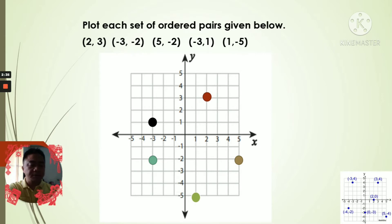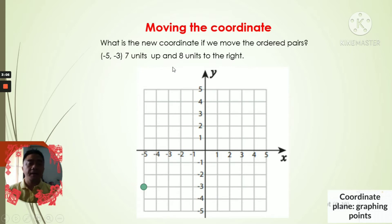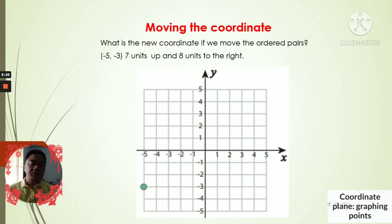Now we have a new activity about ordered pairs — moving the coordinate. We're going to move a point using directional movement. The question is: what is the new coordinate if we move the ordered pairs? Remember, when we say to the right it's going to your right hand side, to the left is going to your left hand side, going up is going north, and going down is going south.